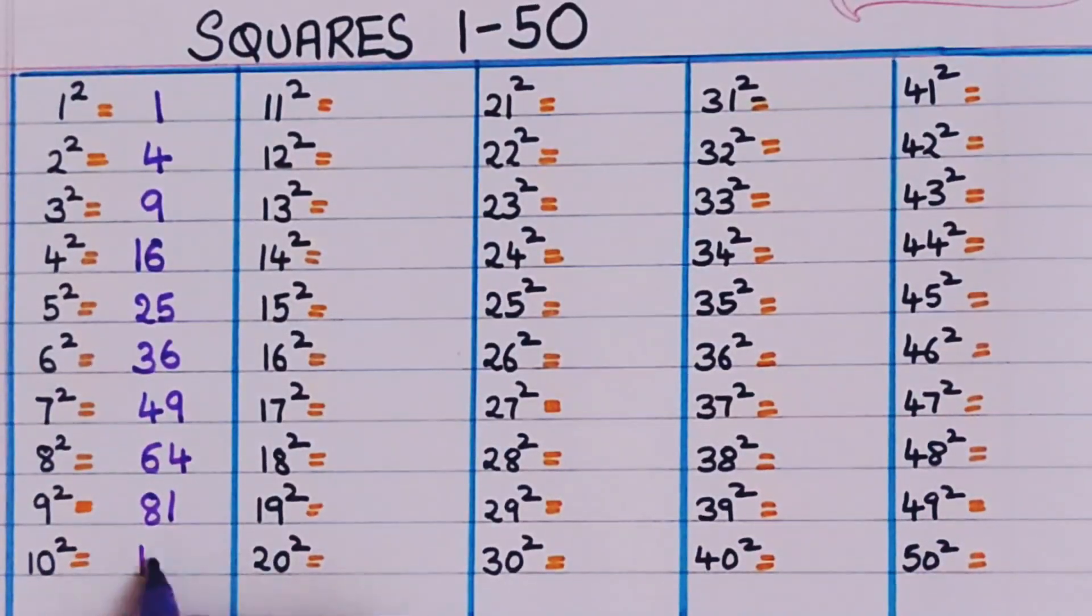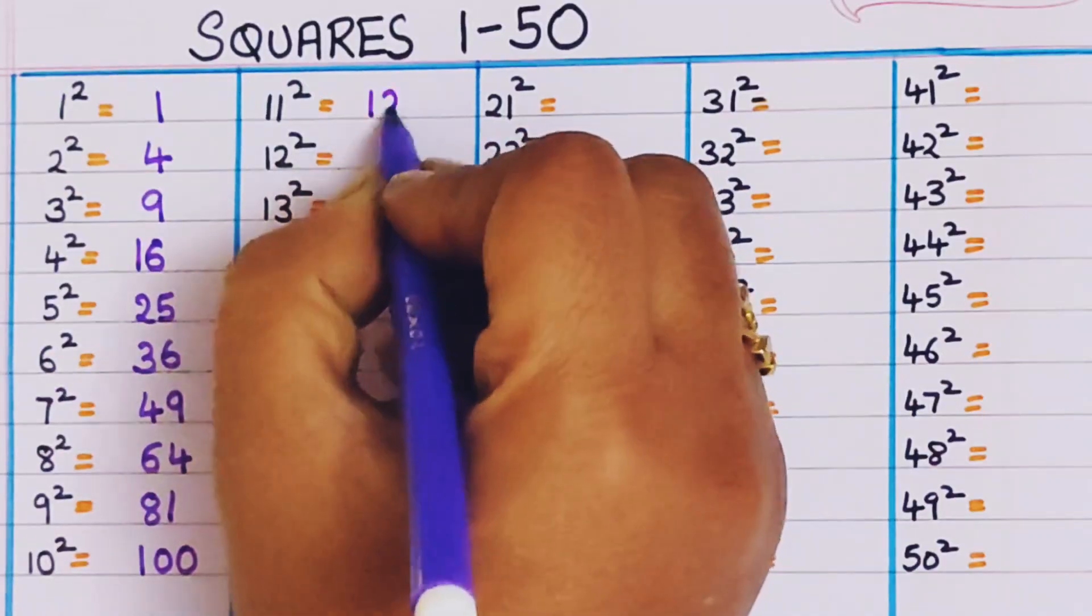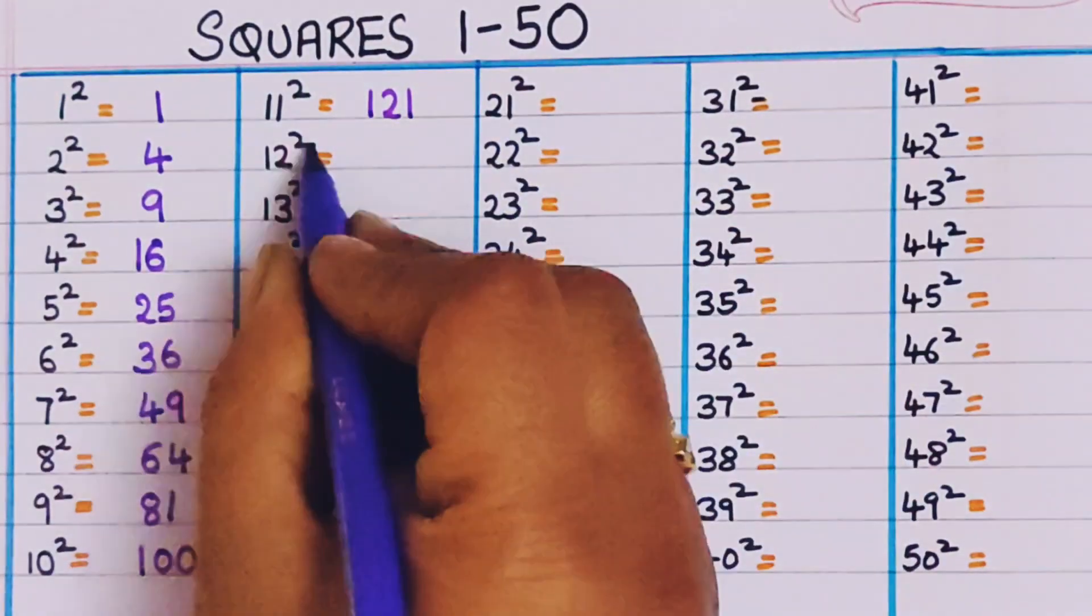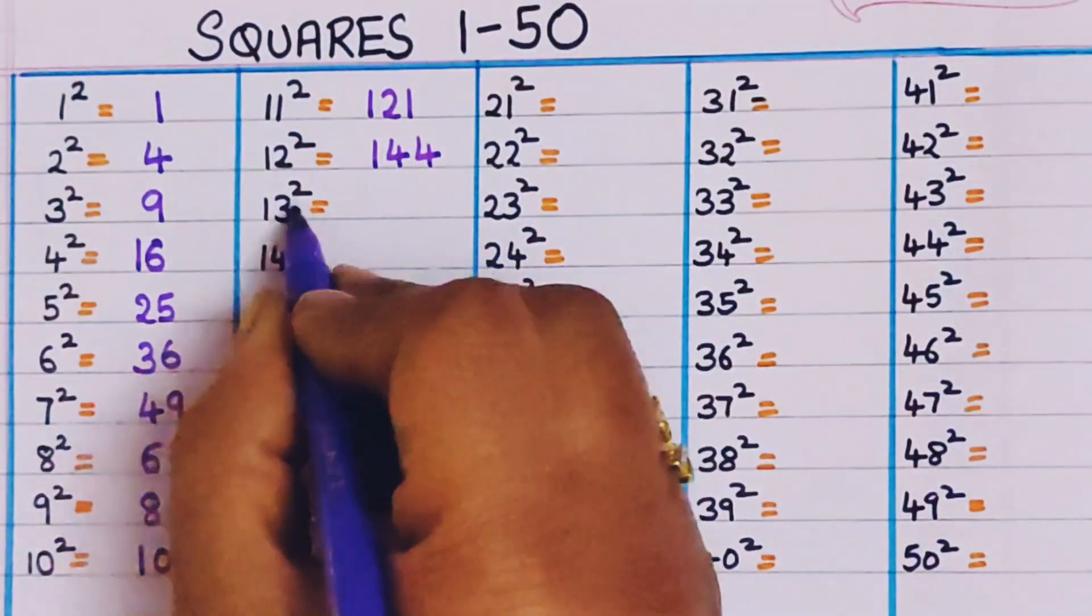10 square, 100. 11 square, 121. 12 square, 144.